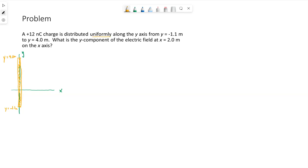Uniformly means lambda is a constant. We could find this value by taking this total charge of 12 nanocoulombs and dividing it by the length of this distribution. So 4.0 minus negative 1.1, so 4 and then 5.1 meters. So the charge is distributed between 4 meters and negative 1.1 meters, distributed along a length of 5.1 meters. So we know lambda.